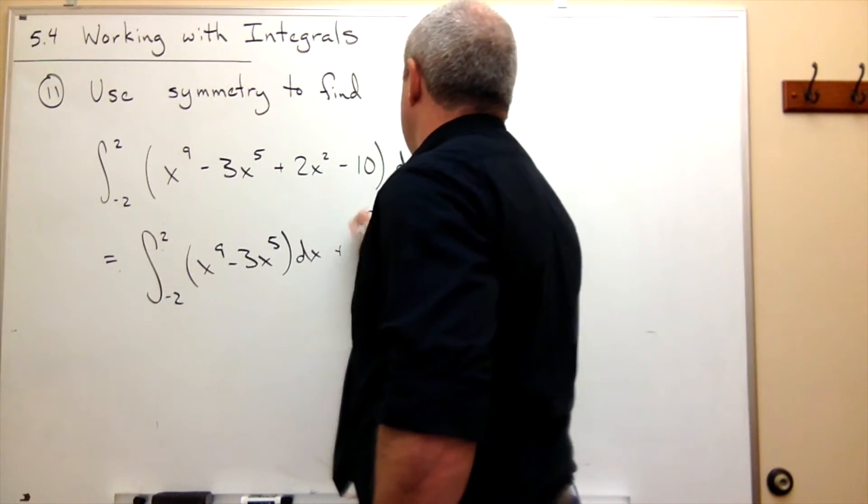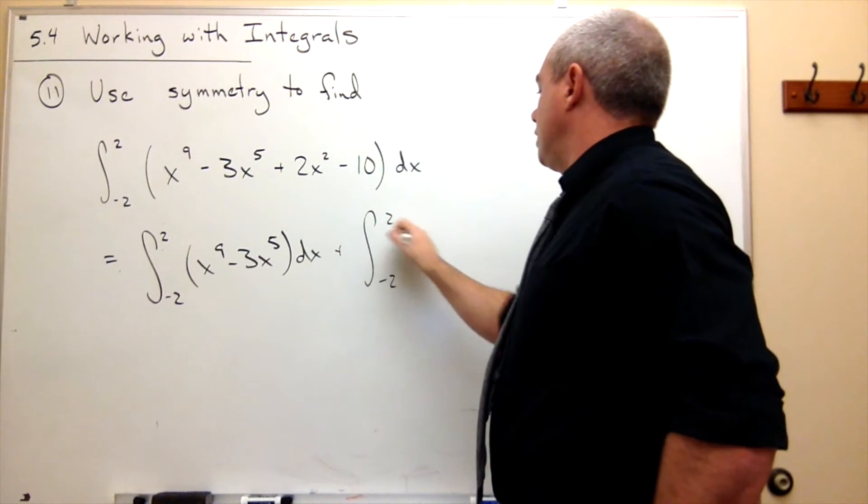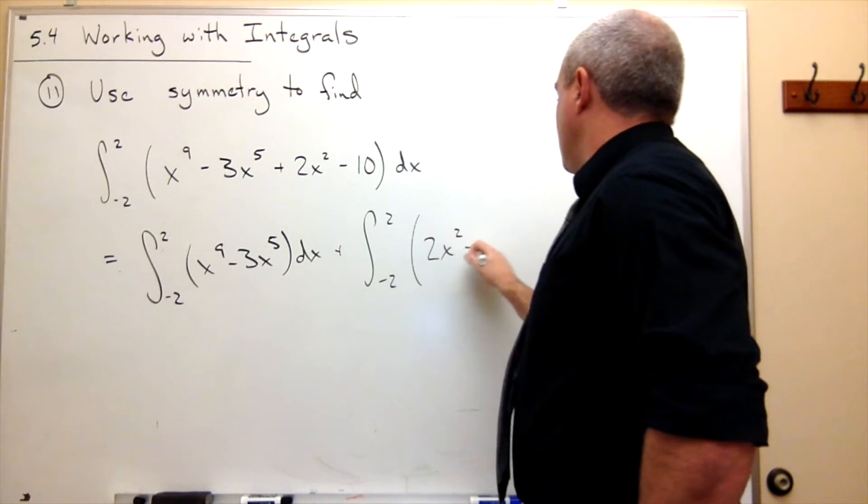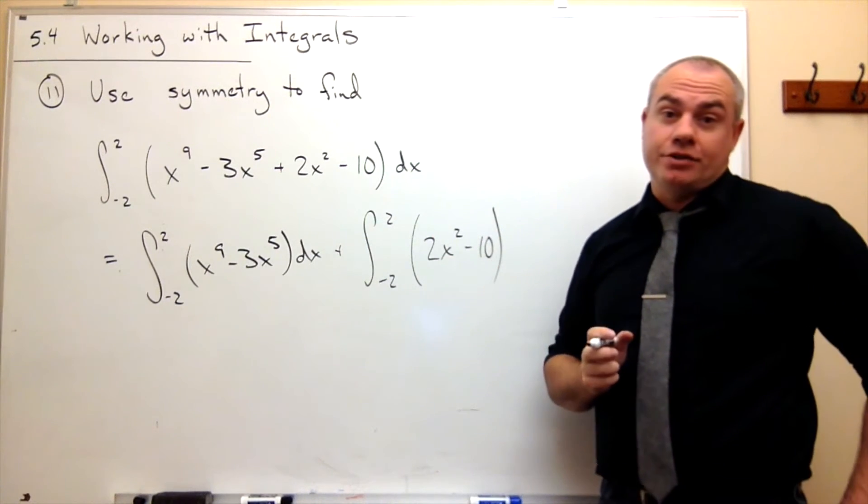Plus, now we'll write an integral from negative 2 to 2 of 2x squared minus 10, which is an even function dx.